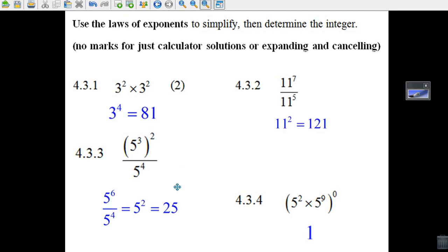Now, just like the last question, it's 5 to the 6th divided by 5 to the 4. 6 minus 4 is 2. It's 5 squared. And 5 squared, you should know, is 25.